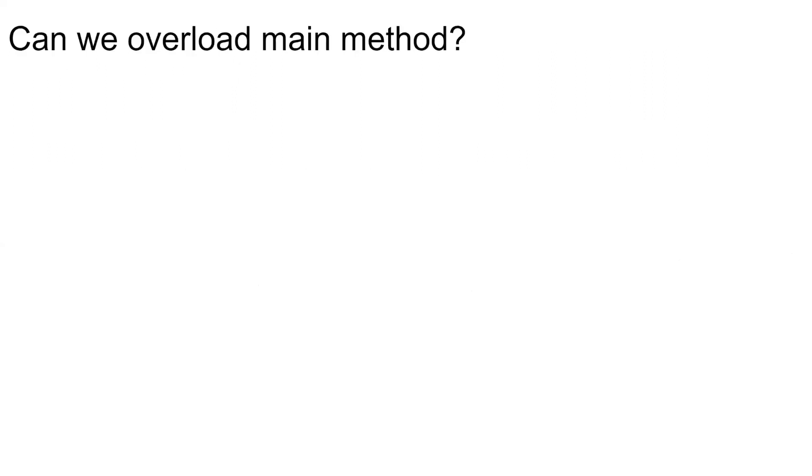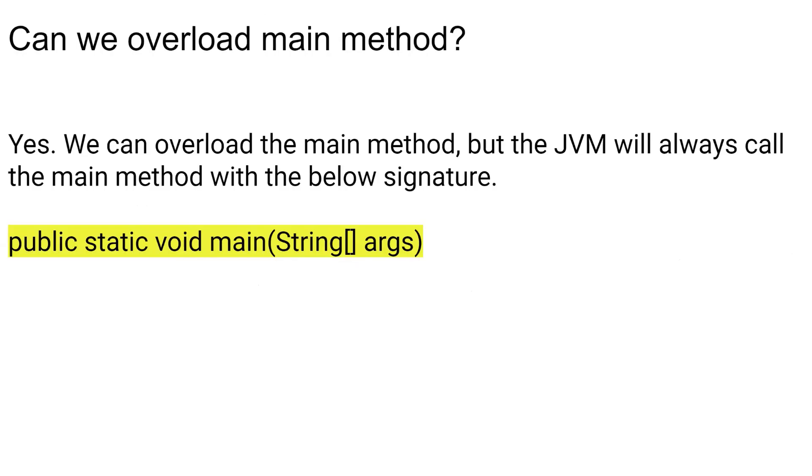Can we overload main method? Yes, we can overload main method. But JVM will always call the main method which has the below signature, which is public static void main, and it accepts string array arguments. So even if you overload your main method, JVM will actually call this method which has exact signature as public static void main and it accepts your string array arguments.